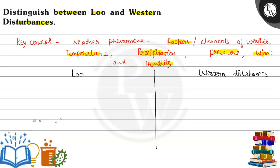Let us look at the difference. The first point: Loo is a hot weather phenomenon, so it is a summer phenomenon.